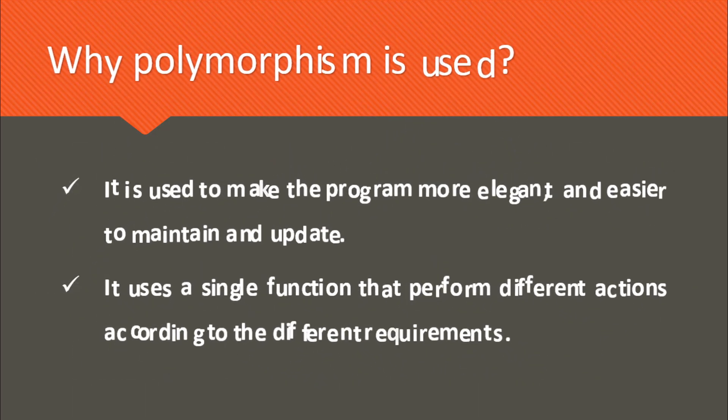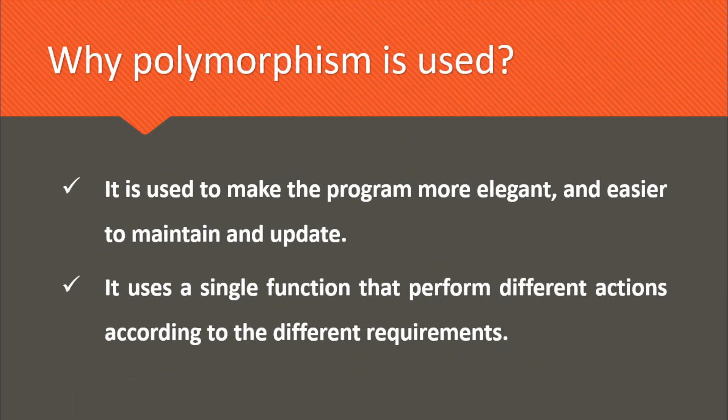Why is polymorphism used? It is used to make the program more elegant and easier to maintain and update. It uses a single function that performs different actions according to different requirements. Now to understand polymorphism better, let's start coding.